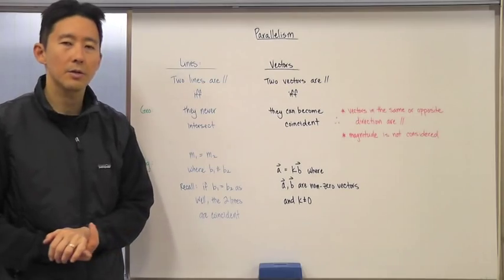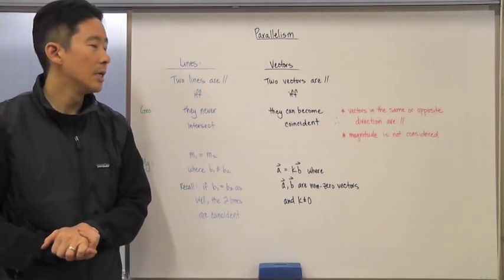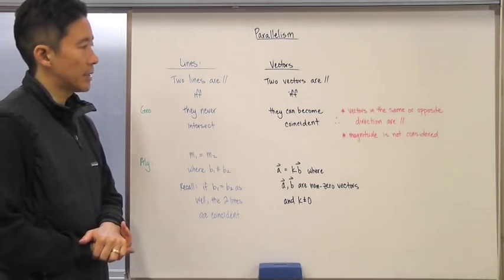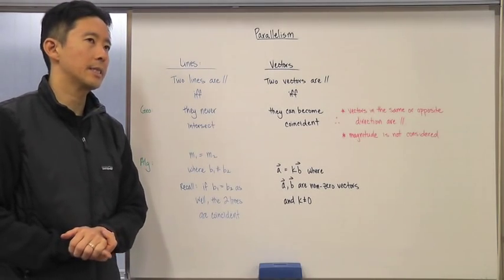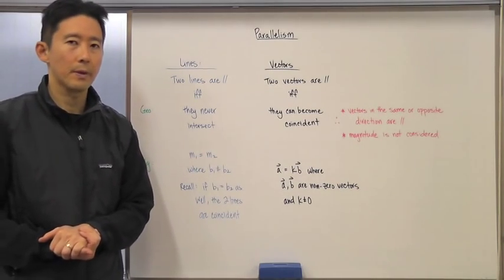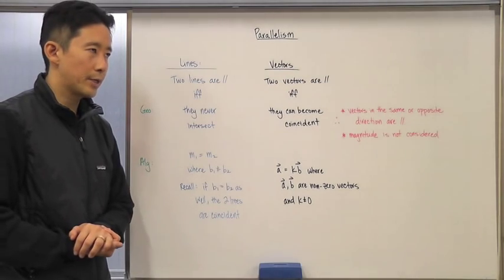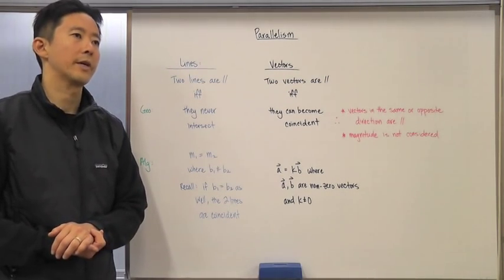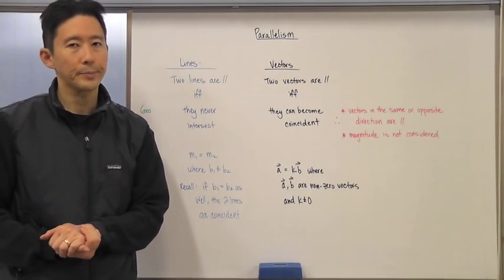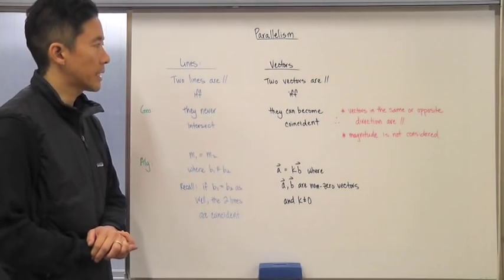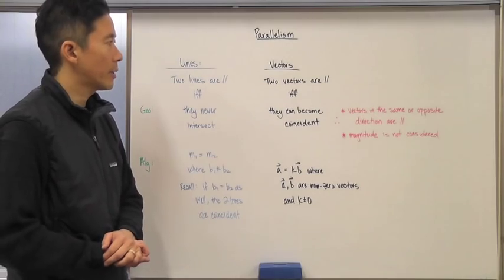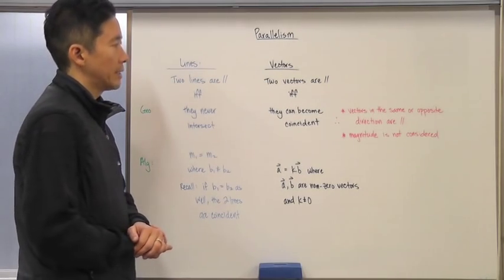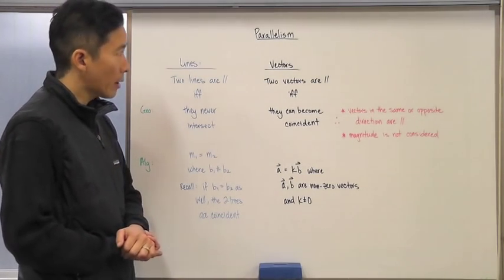So let's talk about vectors now. Vectors are a little bit different in the sense that location doesn't matter. So long as the direction and magnitude of the vectors are maintained, then we know those vectors are equivalent to each other. That means we have to be careful with how we geometrically interpret parallelism of vectors.